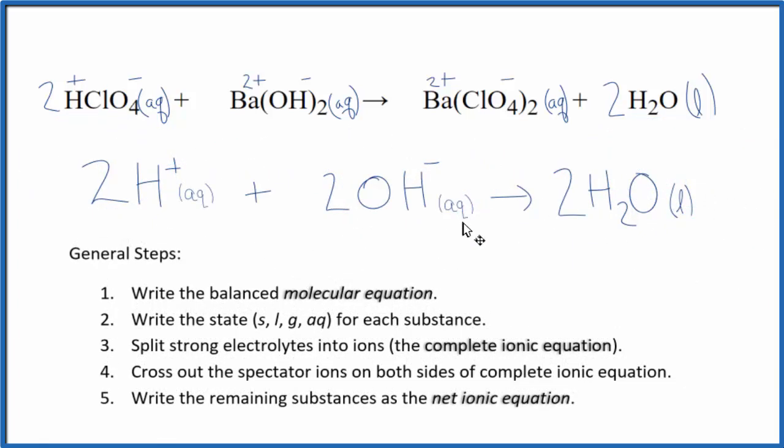So this is the net ionic equation for perchloric acid plus barium hydroxide. You'll notice we have a 2 in front of each substance. So we can reduce that down to a lower number. We can have 1, 1, 1, but we don't write the 1s.